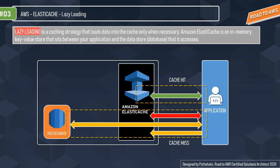In lazy loading: a cache hit occurs when data is in the cache and isn't expired — the cache returns the data to the application. A cache miss occurs when data isn't in the cache or is expired — the cache returns null, the application requests and receives the data from the database, and then updates the cache with the new data. Lazy loading avoids filling up the cache with data that is never requested.